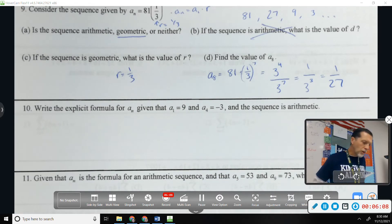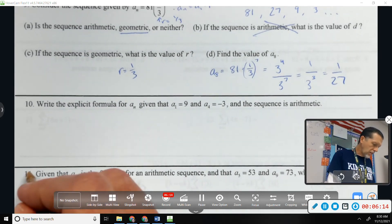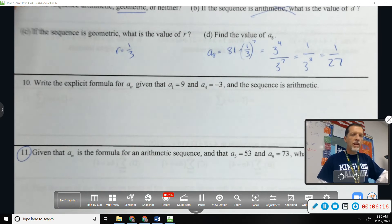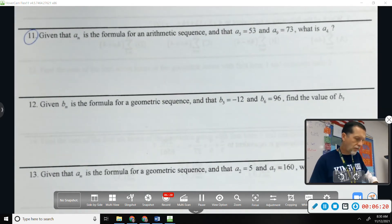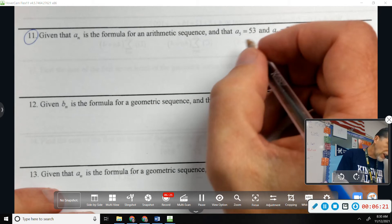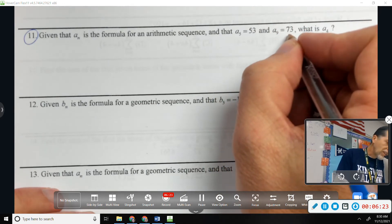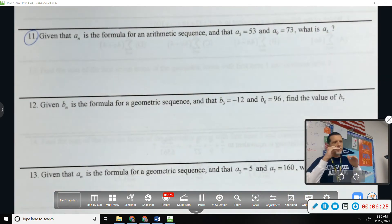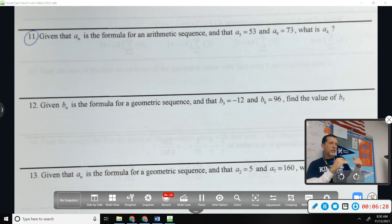That was a geometric. Let's do one that's arithmetic and then we'll move on. Let's do number 11. Given that a_n is arithmetic, a_5 is 53, a_9 is 73. Okay, so this is the step thing.